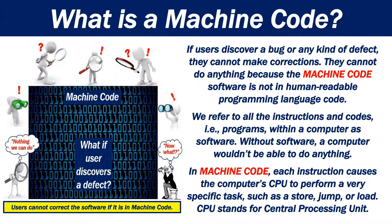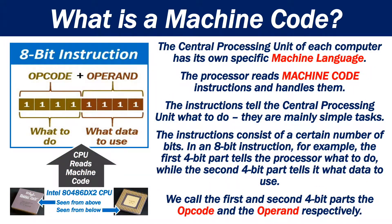In machine code, each instruction causes the computer's CPU to perform a very specific task, such as a store, jump, or load. CPU stands for Central Processing Unit. The Central Processing Unit of each computer has its own specific machine language. The processor reads machine code instructions and handles them. The instructions tell the Central Processing Unit what to do. They are mainly simple tasks. The instructions consist of a certain number of bits.